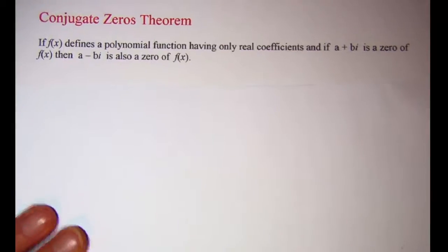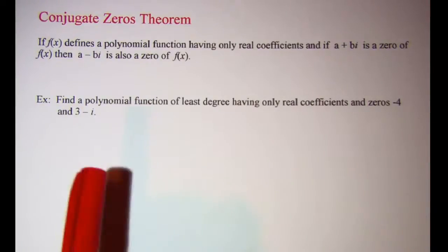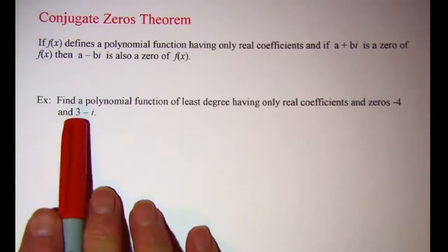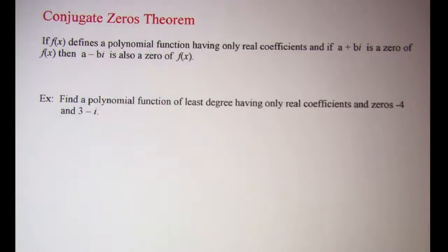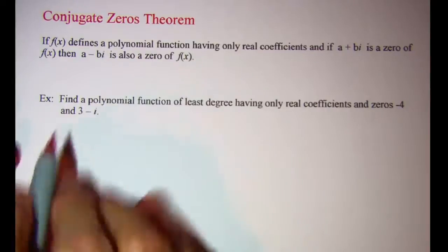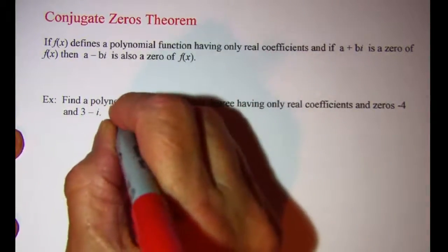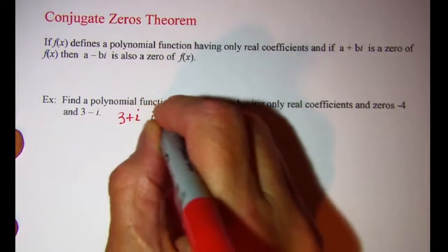Now let's use that theorem to find a polynomial function of least degree having only real coefficients and zeros negative 4 and 3 minus i. Our conjugate zeros theorem guarantees that if 3 minus i is a zero, then 3 plus i is also a zero.